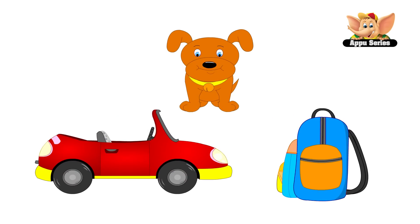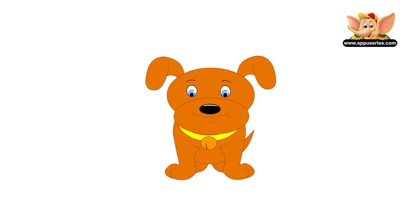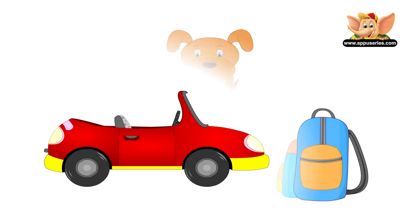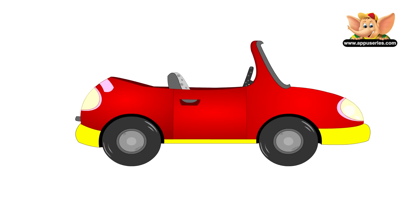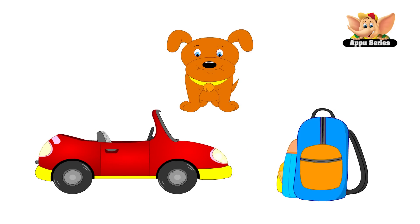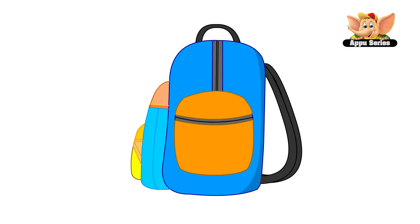I've taken a few images of different objects. Can you guess from which side I have shot it from? This is the picture of a dog, and if you guessed it, it was shot from the front view. This is a picture of a car, and this one's shot from the side view. Here's a picture of a bag — this bag is shot from the side view.